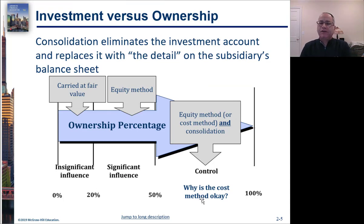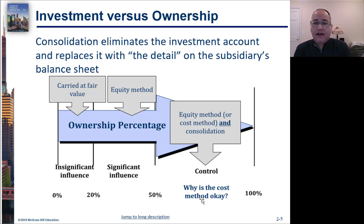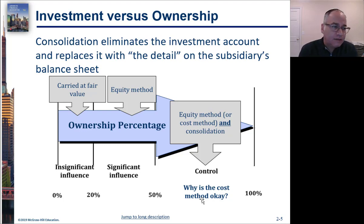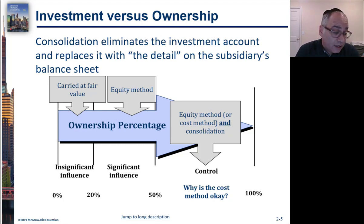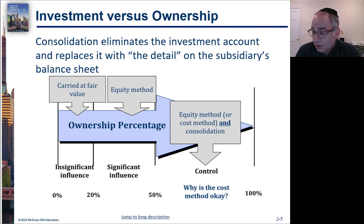The cost method is acceptable — it's like the fair value method except you don't mark the investment to market value. You have a lot of flexibility in how to account for it if you have control, because whatever you do on your books you have to undo when you consolidate. When you have less than 20% or insignificant influence, you carry the investment at fair value — that's marketable security accounting, where you mark the investment to market. In some circumstances that goes to the income statement and in others to other comprehensive income, depending on whether it's a trading security or a longer-term investment.